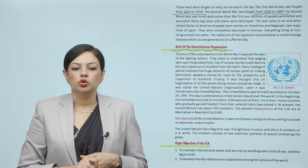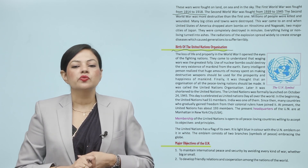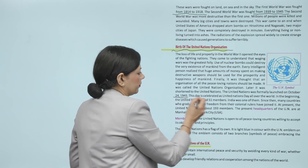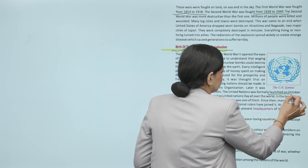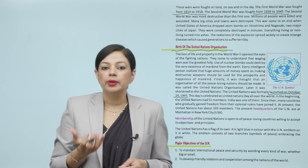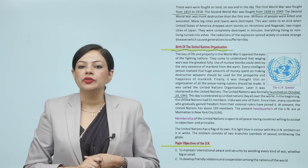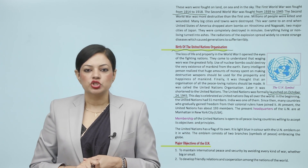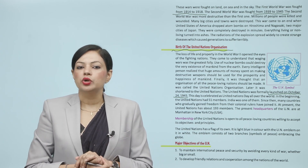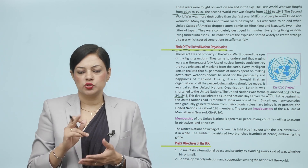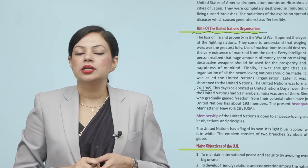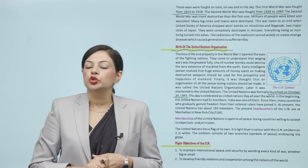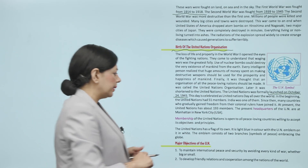Later, it was shortened to the United Nations. The United Nations was formally launched on October 24, 1945. This day is celebrated as United Nations Day all over the world. In the beginning, the United Nations had 51 members only, and India was one of them. Since then, many countries who gradually gained freedom from their colonial rules have joined it. At present, the United Nations has about 193 members.